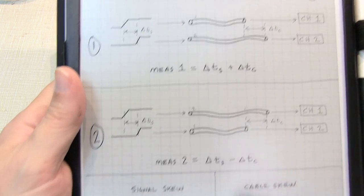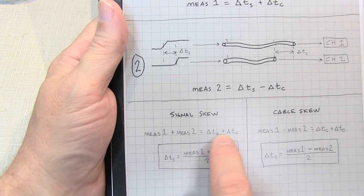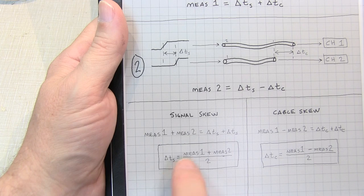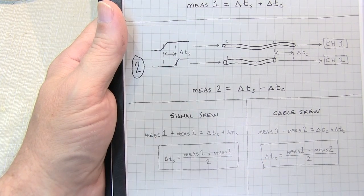So we're left with measurement 1 plus measurement 2 is 2 times the signal delay, so we simply take the sum of the measurements divided by 2. That gives us the signal delay only.